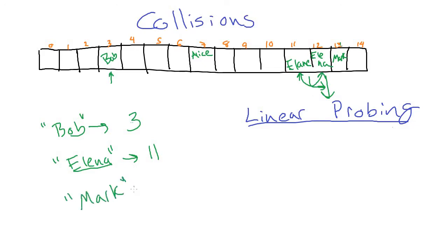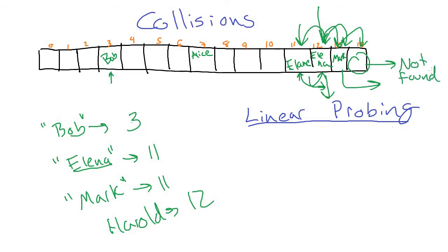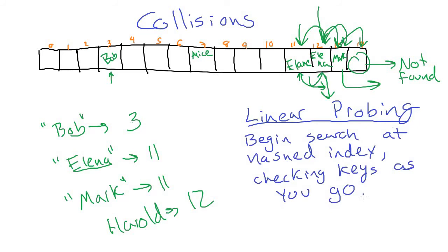Likewise, if we were looking up Mark, we'd get index 11, go there and see the key is not Mark, move to the next slot — not Mark either — then find that the key is Mark and return the data. If we're looking for someone not in the table like Harold, we'd start at their hash index and probe down until we get to a cell that's empty, then return that it's not found.